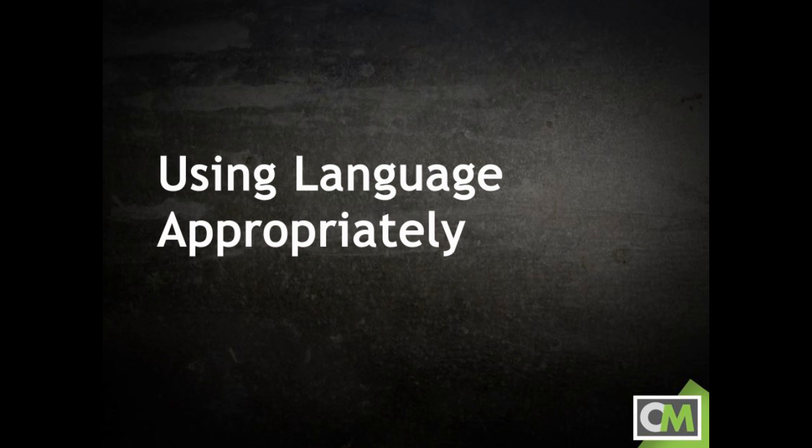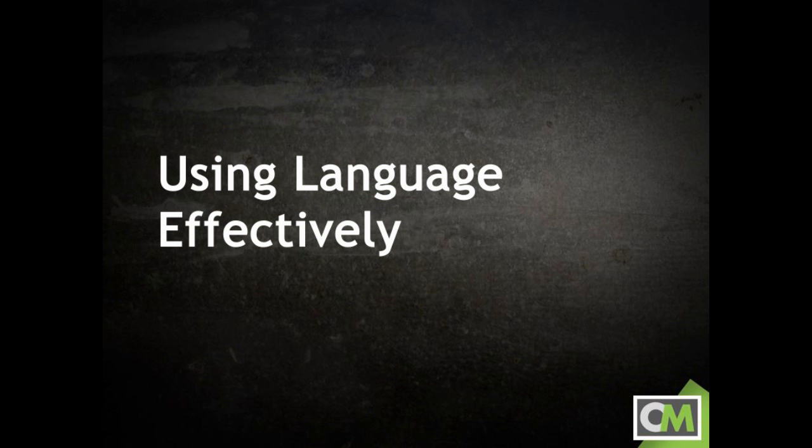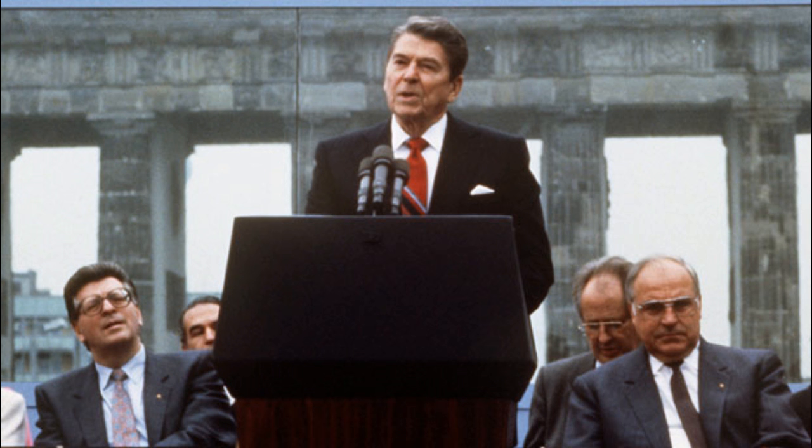In addition to using language appropriately, a public speaker should strive to use language effectively. One powerful tool for speakers is to create imagery using language. In his famous 1987 speech at the Berlin Wall, Ronald Reagan planted an image of the wall coming down in the mind of his audience. Standing at the Brandenburg Gate in West Berlin, Reagan said, 'General Secretary Gorbachev, if you seek peace, if you seek prosperity for the Soviet Union and Eastern Europe, if you seek liberalization, come here to this gate.'